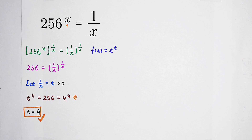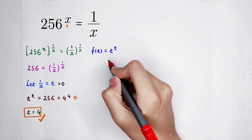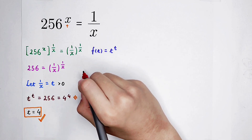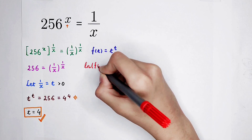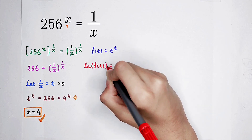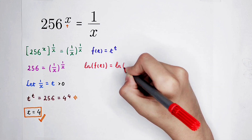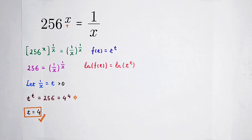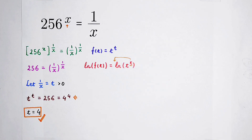Of course, we use the derivative. Before taking the derivative, we have to take the natural log on both sides, and I'm going to write it with red pen. So the natural log of f of t equals the natural log of t to the power of t, and the t can come out in front of the log sign.